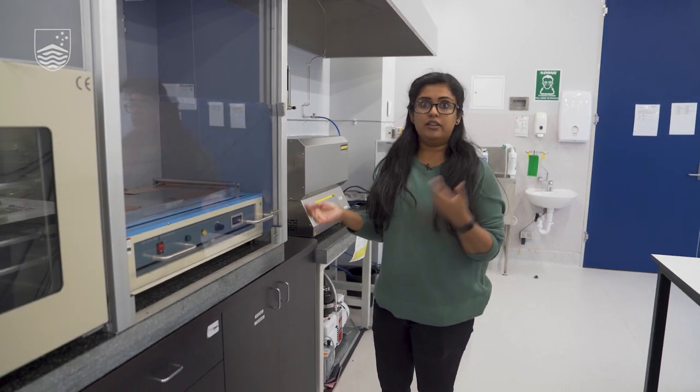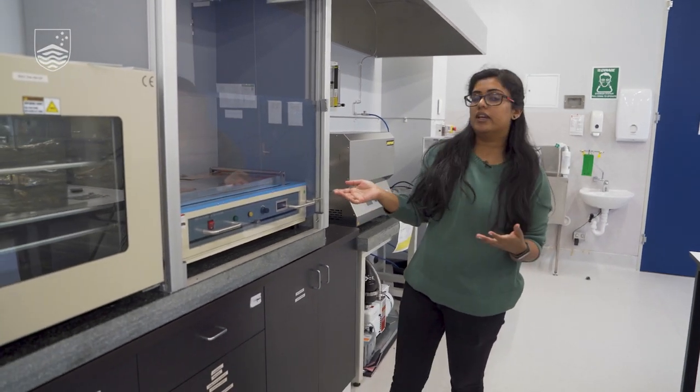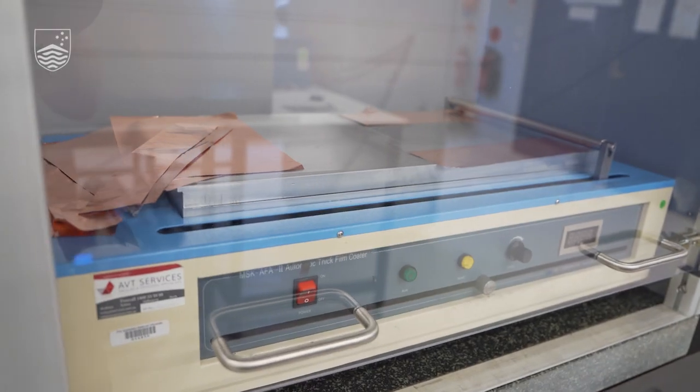Here what we're having is an electrode coater so this is something that we use for coating of our cathodes and anode materials on the current collectors.